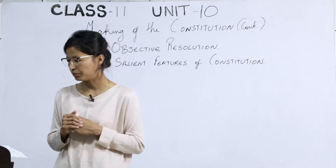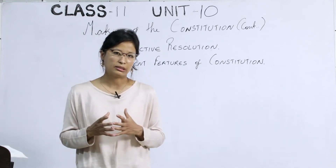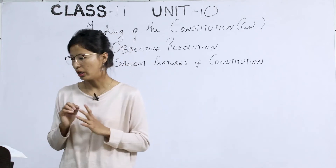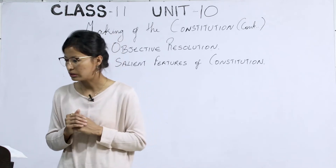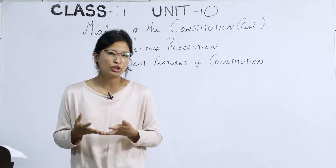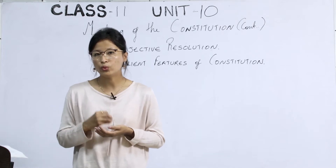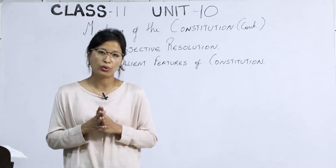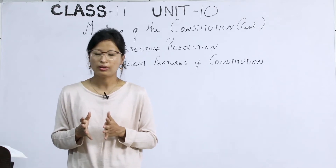Point number four: justice — social, economic, and political justice in these three spheres — as well as equality of status and of opportunity, and freedom of speech, thought, expression, belief, faith, and worship should be entitled to all the people without any discrimination.